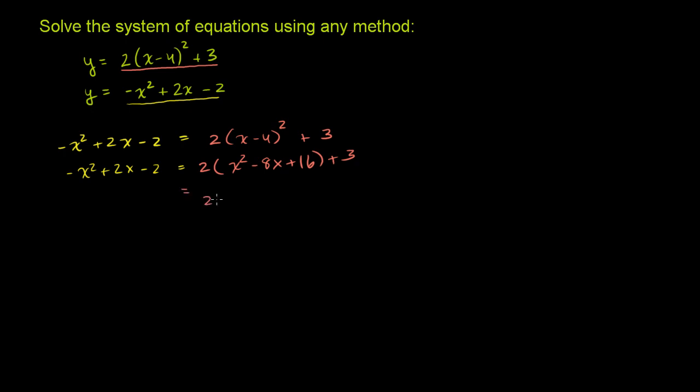This is going to be equal to 2x squared, I'm just distributing the 2, minus 16x, 2x squared minus 16x plus 32 plus 3, which is equal to 2x squared minus 16x plus 35.